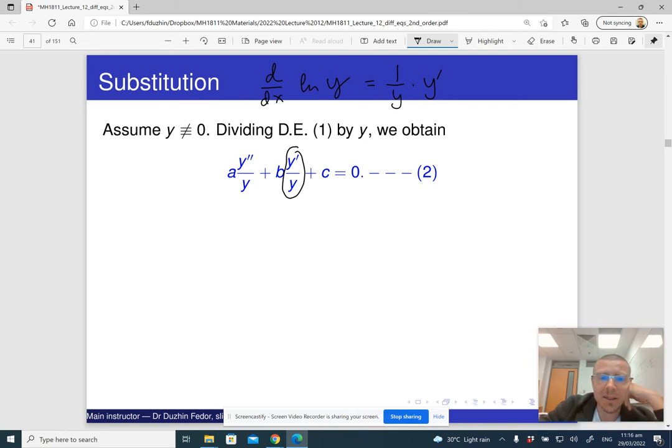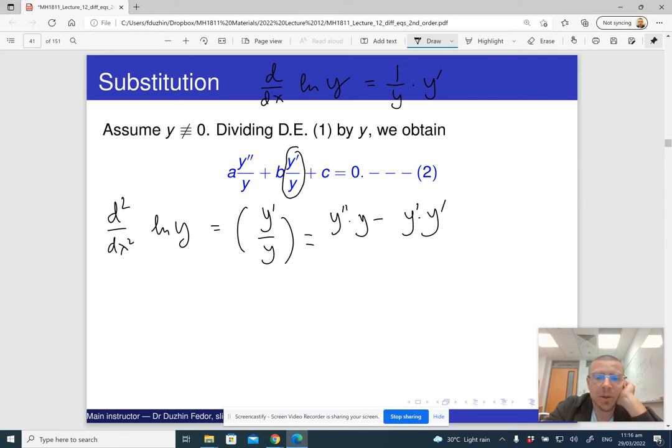But what is the second derivative? What is d²/dx² of ln y? I've got to differentiate y prime over y. This is according to the ratio rule. This is y double prime times y minus y prime times y prime divided by y squared.